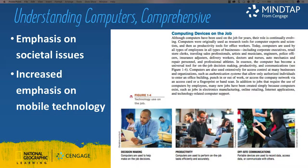Morley Parker's Understanding Computers: Today and Tomorrow is known for a unique emphasis on societal issues and industry insights from respected leaders. This book makes computer concepts relevant to today's career-focused students. Students learn about relevant cutting-edge technology trends and also gain a better understanding of technology in general and the important issues surrounding technology today. The author's goal is to provide readers with a solid knowledge of computing fundamentals, an understanding of the impact of our technology-oriented society, and a framework for using this knowledge effectively in their lives. The 16th edition offers an increased emphasis on mobile computing and related issues, such as mobile commerce and mobile security.